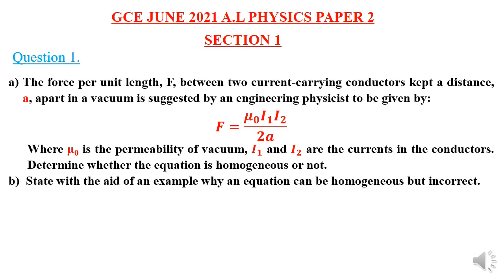Part B states: give, with the aid of an example, why an equation can be homogeneous but incorrect. That question was allocated 6 marks.